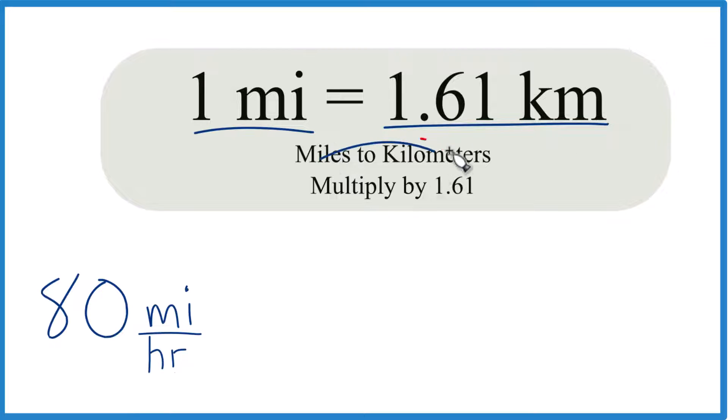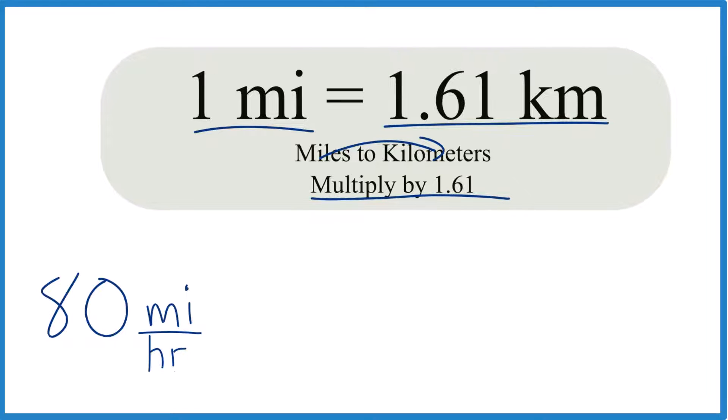So we're going miles to kilometers. We're just going to multiply by 1.61. So we take our 80 miles per hour, multiply that by 1.61, and that will give us kilometers per hour when we do the multiplication.